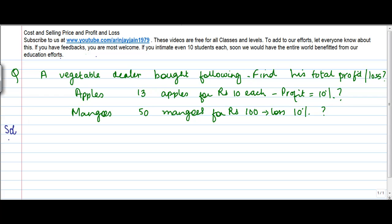Now we are given two things here: one is the apple on which there's a profit, and then there are mangoes on which there is a loss. What we need to do is find out the total profit or loss made by the vegetable dealer. So I need to find out the profit in the case of apples and the loss in case of mangoes. Let's do it first for apples.